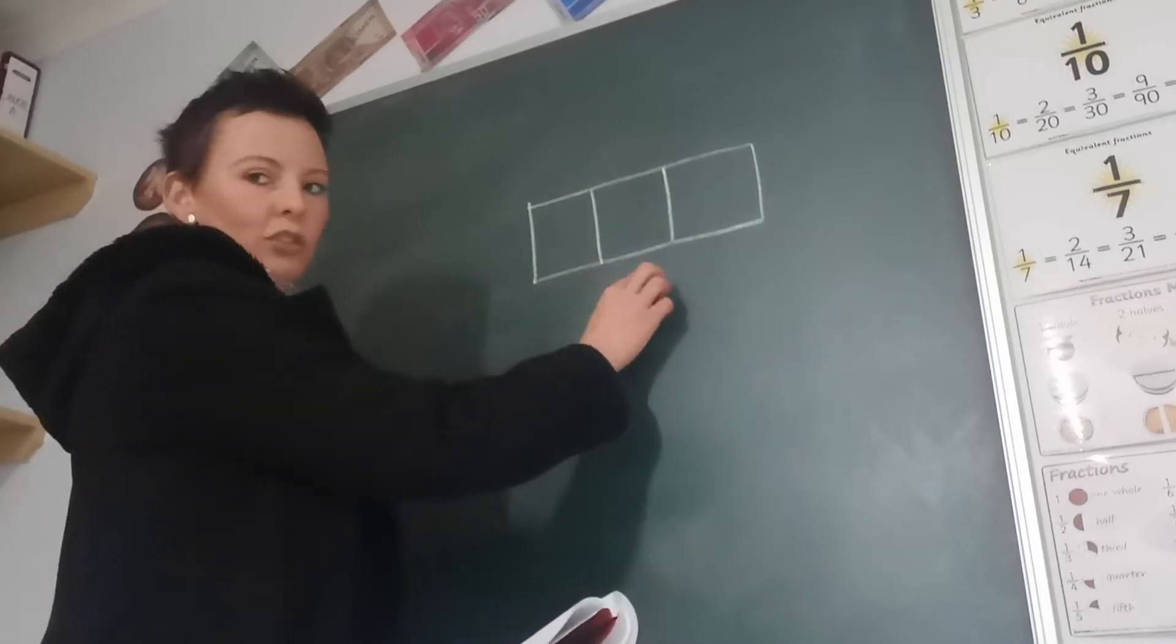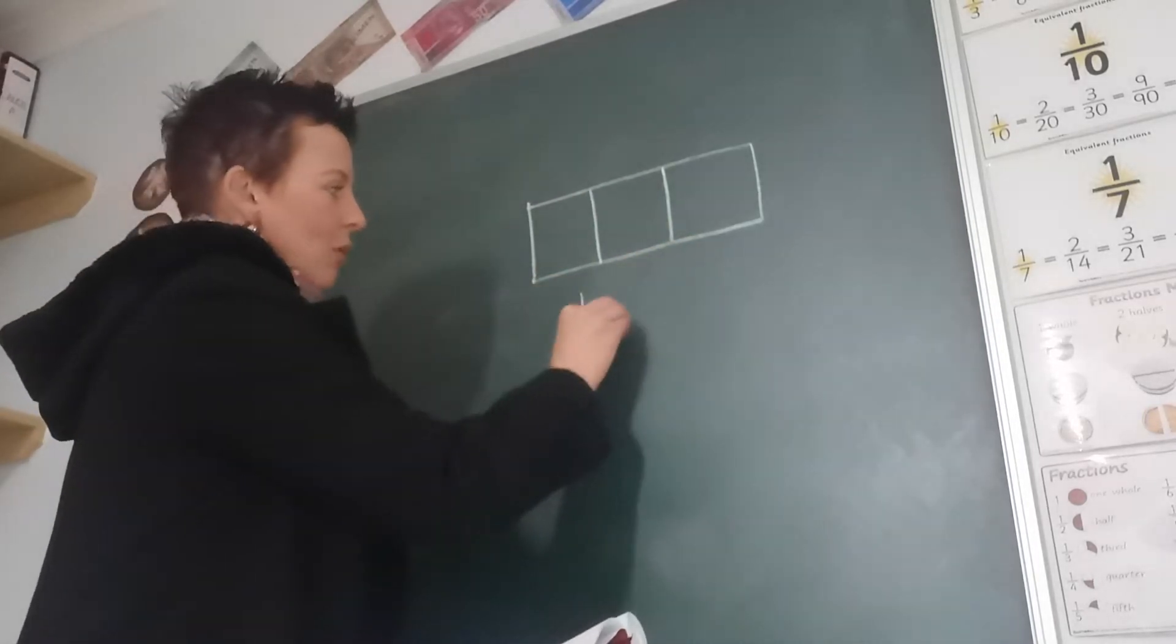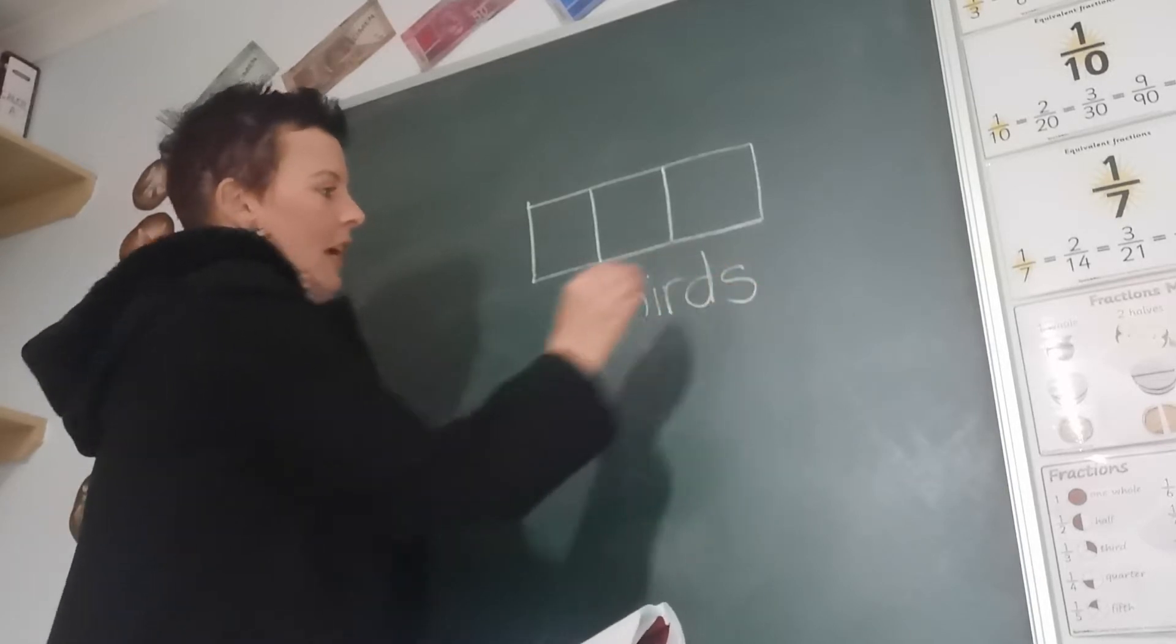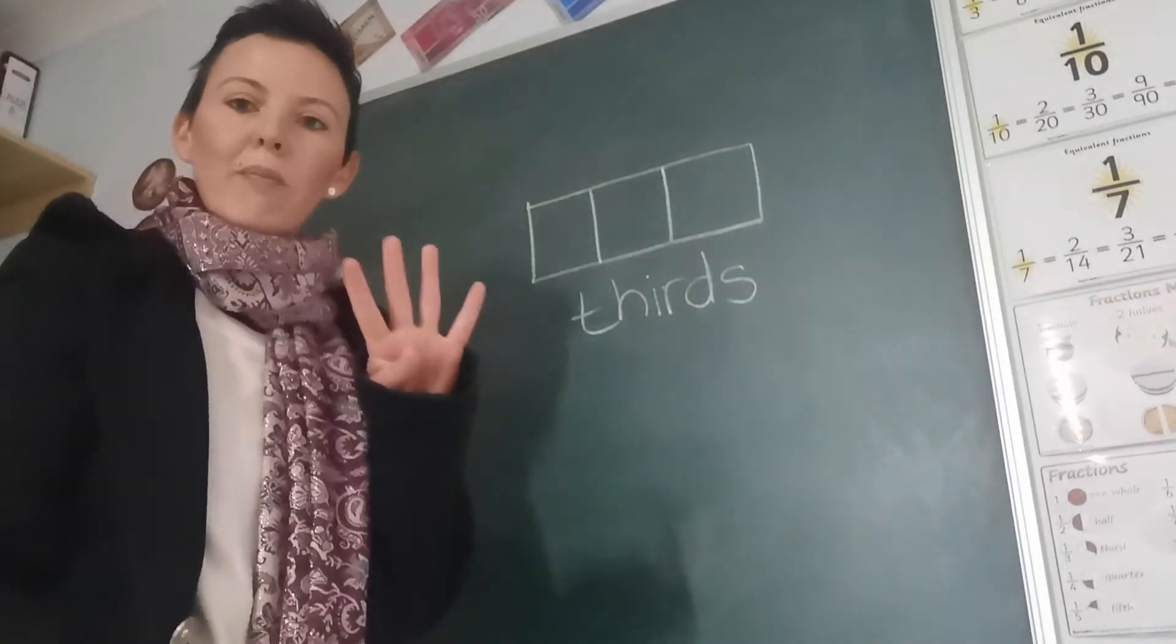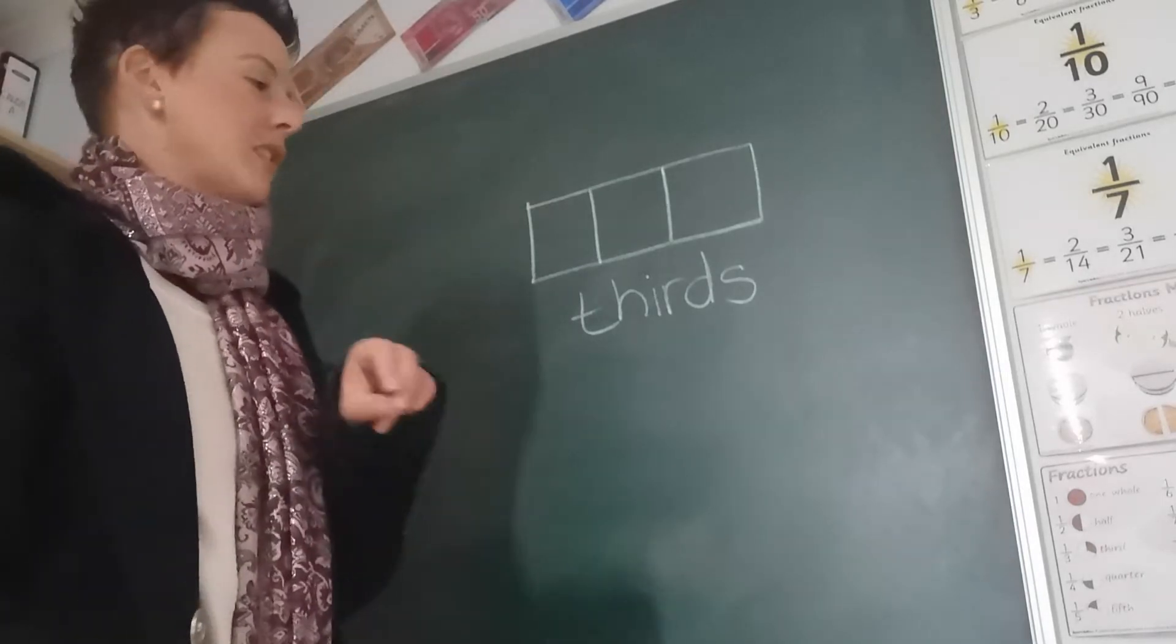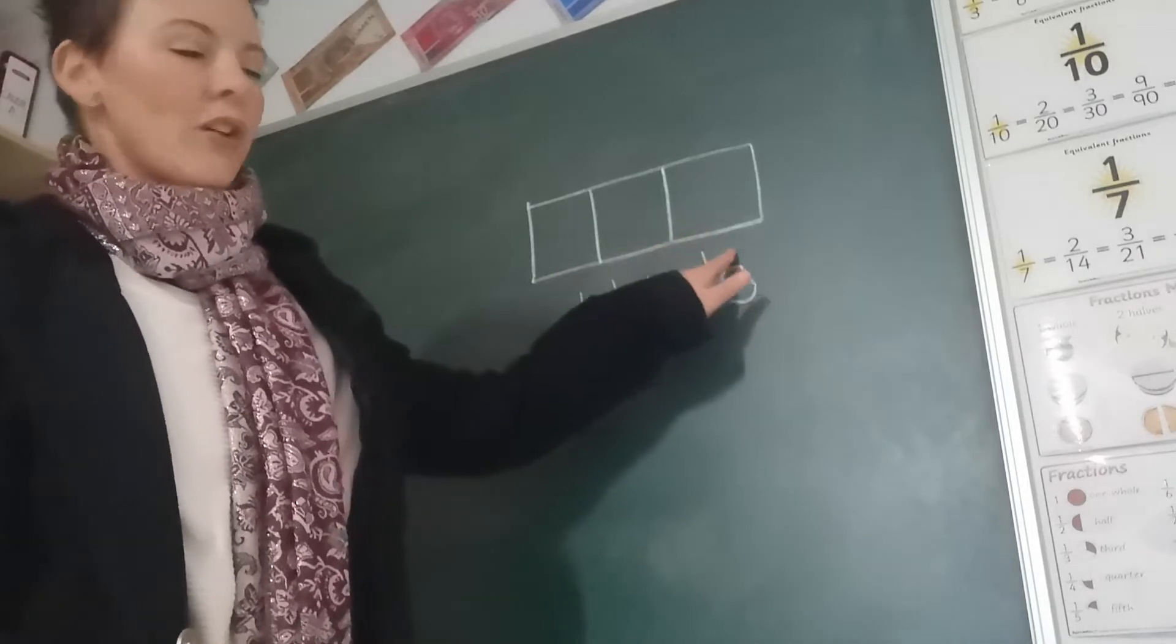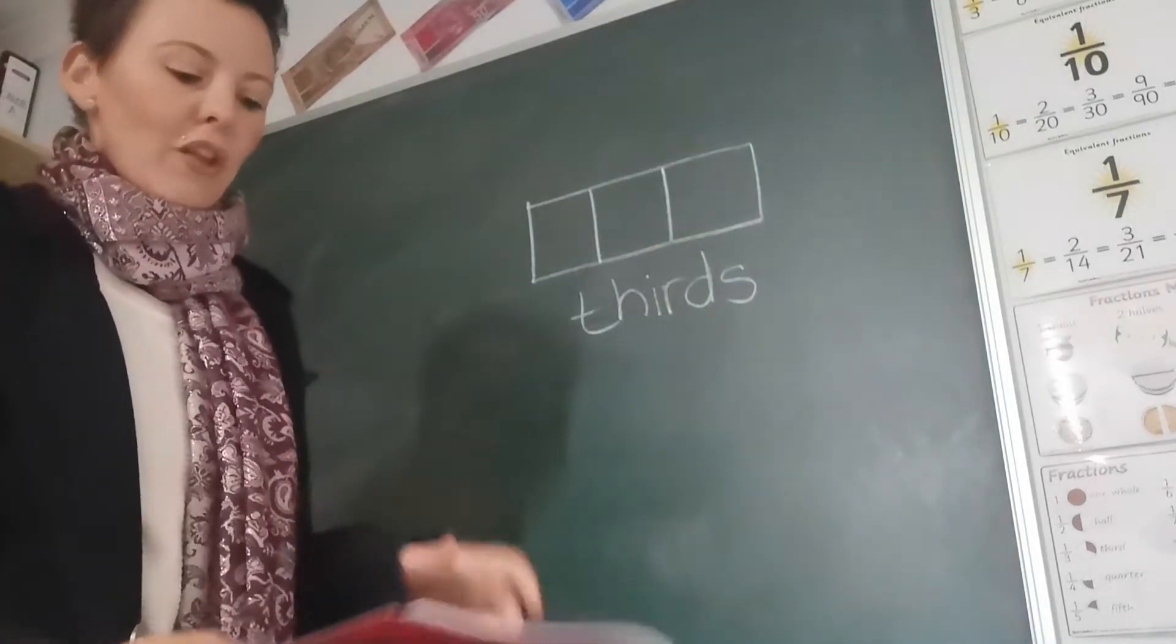Okay, 1, 2, 3. So that is called thirds. Remember yesterday the shape was divided into 4 parts, that was quarters. It was divided into 2 parts is half. So here they divided it into 3 parts. So that is called thirds.